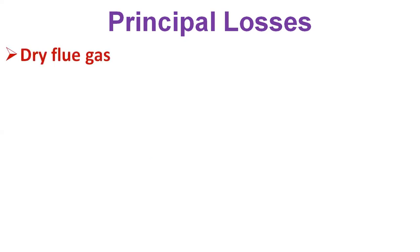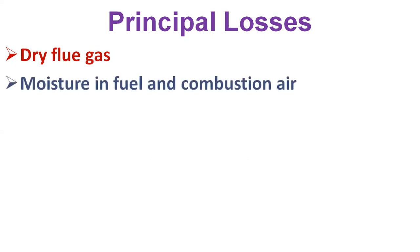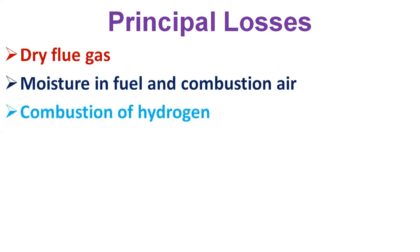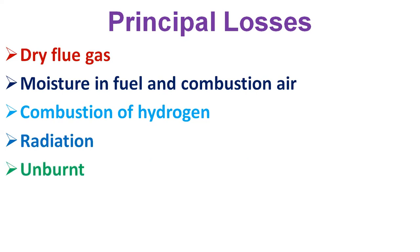The principal losses that occur in a boiler are: loss of heat due to dry flue gases, loss of heat due to moisture in fuel and combustion air, loss of heat due to combustion of hydrogen, loss of heat due to radiation, and loss of heat due to unburnt fuel. Loss due to moisture in fuel and loss due to combustion of hydrogen are dependent on the fuel and cannot be controlled by design.